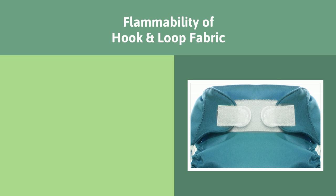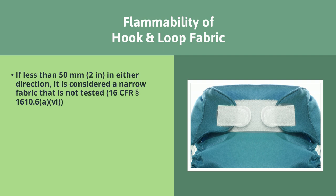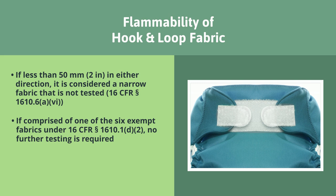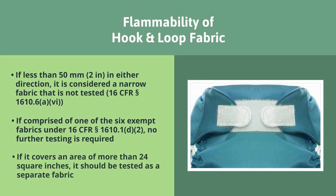Cloth diapers frequently use hook and loop fabric as closures. If a diaper contains hook and loop fabric and it is less than 50 millimeters in either direction, it is considered a narrow fabric that is not tested. If the hook and loop fabric is comprised of one of the six exempt fabrics under 16 CFR section 1610.1 D2, no further testing is required. If the hook and loop fabric covers an area of more than 24 square inches and is not comprised of one of the exempt fabrics, it should be tested as a separate fabric under part 1610.